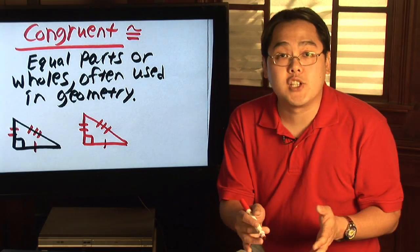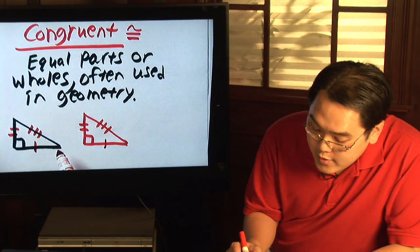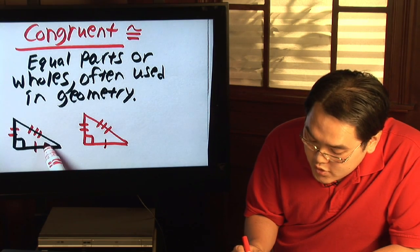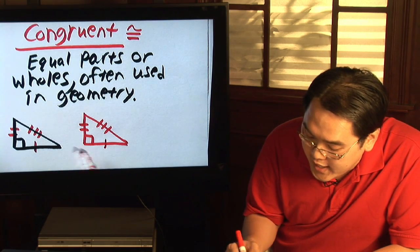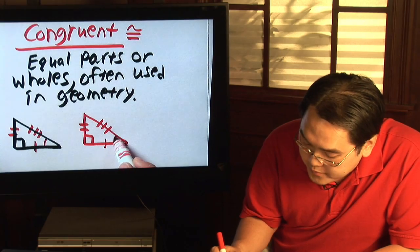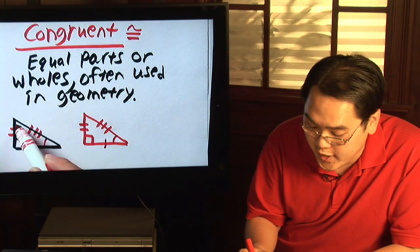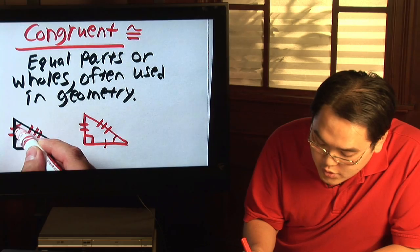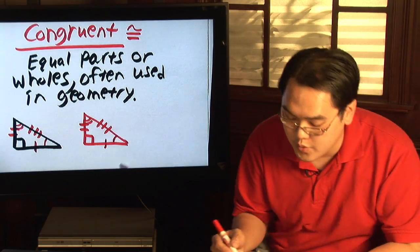Now as it relates to angles, you use curves instead. If you wanted to prove that this angle is congruent to this angle, you draw one curve. And if you wanted to show that this angle was equal to this angle, then you use two curves to indicate the congruence.